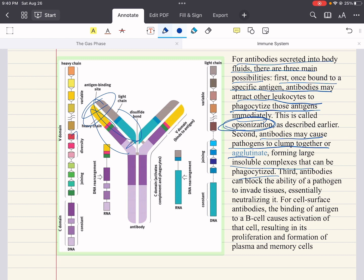Third, you can have neutralization. Antibodies can directly block a pathogen from invading tissue, essentially neutralizing it. For cell surface antibodies, the binding of antigen to a B cell causes activation of that cell, resulting in its proliferation and formation of plasma and memory cells.